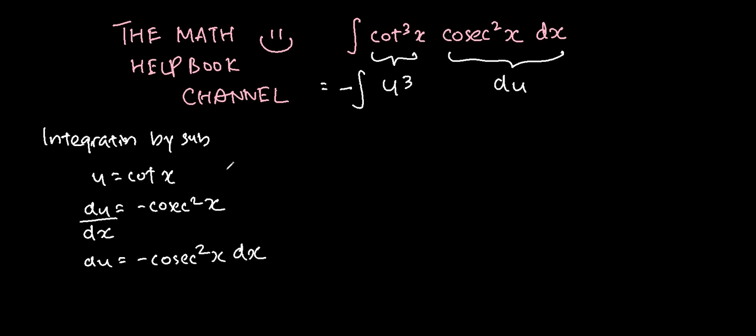Don't forget the negative sign because this is negative. So if we integrate negative u cubed du, this will be negative u to the power of 4 over 4 plus c.